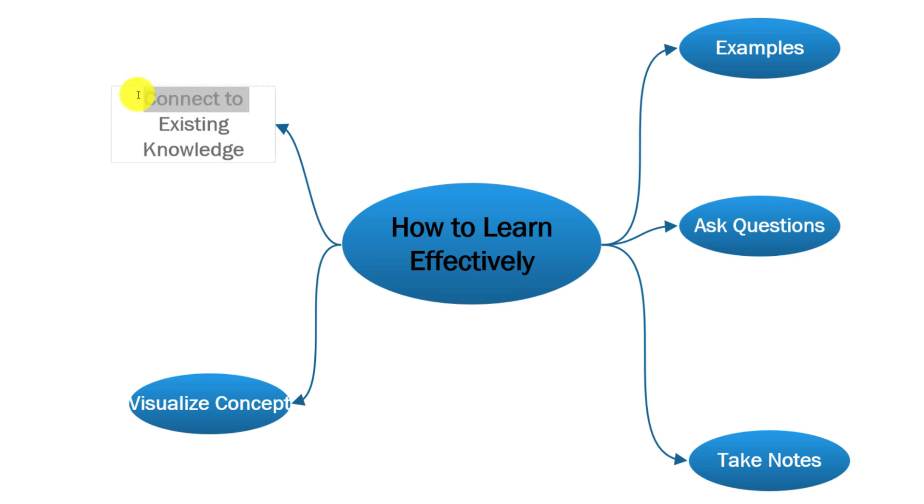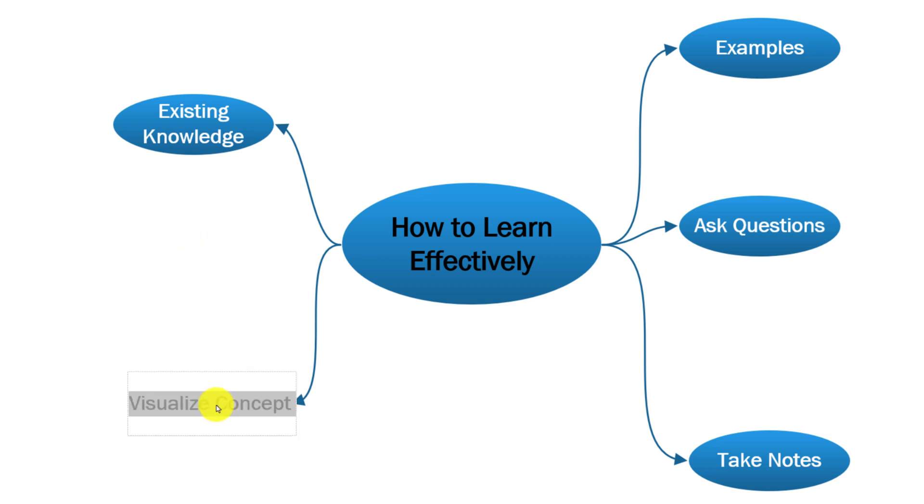For example, instead of 'connect to existing knowledge', I'll just leave 'existing knowledge'. And here, instead of 'visualize concept', I can maybe have it on a different line if I really want to keep both, or I can just leave the word 'visualize'.